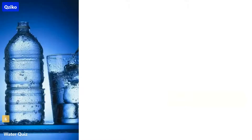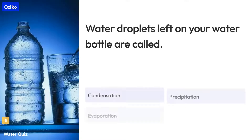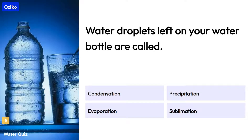Quiz number 6. Water droplets left on your water bottle are called what? The right answer is condensation.